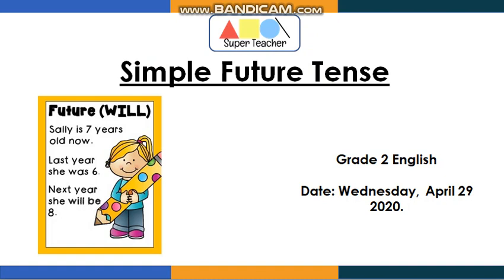Now let's move to simple past tense. We use simple past tense to talk about something that already happened. Can you give me an example? — 'She ate an apple yesterday.' Well done!